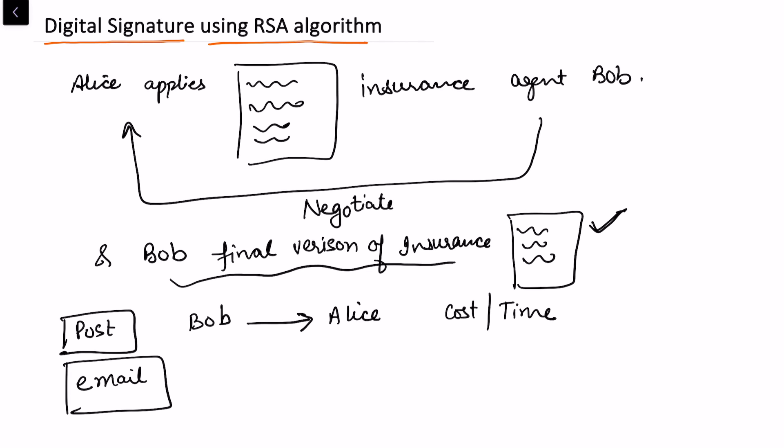Now here they want to ensure security. Bob also wants that Alice should sign this document and then give it back to Bob. This is the basic setup. How to ensure that Bob has received a document which is signed by Alice? That authentication is what we call digital signature.